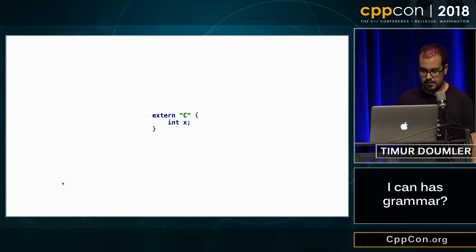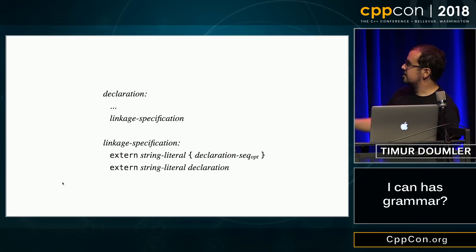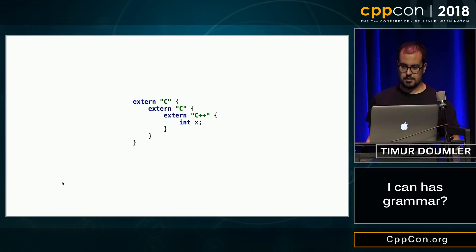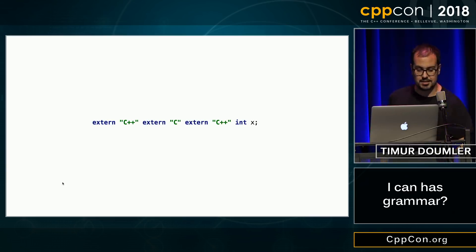For example, linkage specifiers. This kind of extern C kind of thing. The grammar for that is, well, the linkage specification is a declaration, and it can also contain declarations with braces or without braces. So it actually nests, right? It can nest with braces. It can also nest without braces.